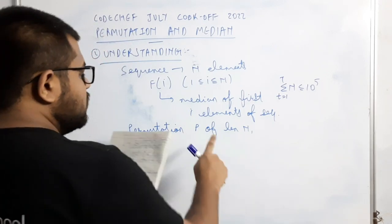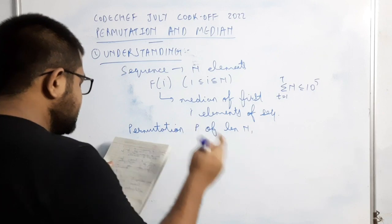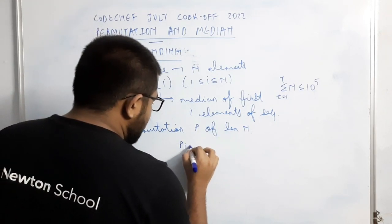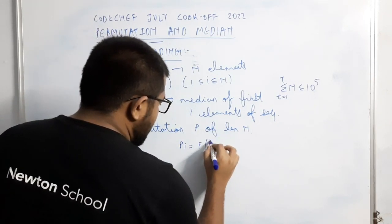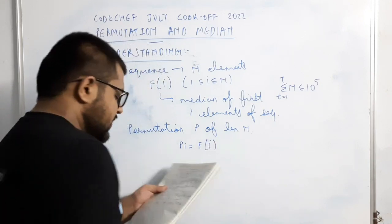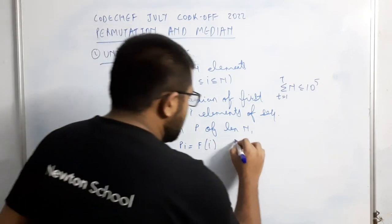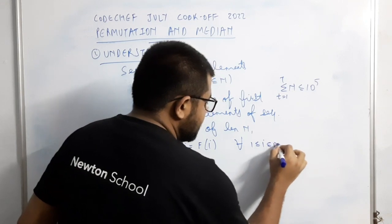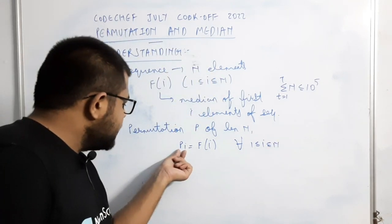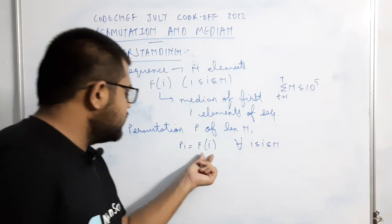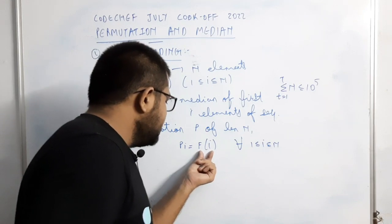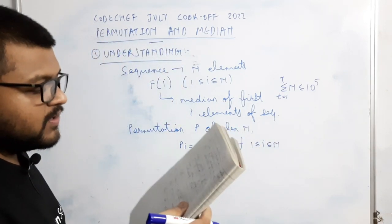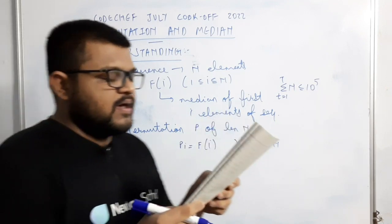Chef ko n length ka ek permutation P aisa chahiye such that P(i) is equal to f(i) for all i between 1 to n. Matlab ki jo i-th element permutation mein hoga, woh pehle i elements ka median hoga. Neeche note karke diya gaya hai: